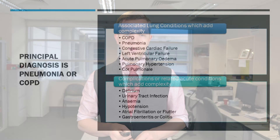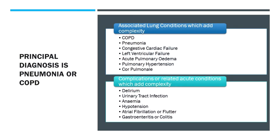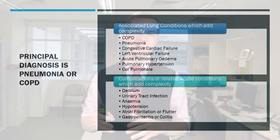Whether it be heart failure of various kinds, acute pulmonary edema, pulmonary hypertension, or cor pulmonale — all of those conditions, if present at the same time as the pneumonia or COPD exacerbation, add to complexity. Likewise, complications or related conditions: each of these, where pneumonia or COPD is the primary diagnosis, will add complexity bringing it up to major complexity.